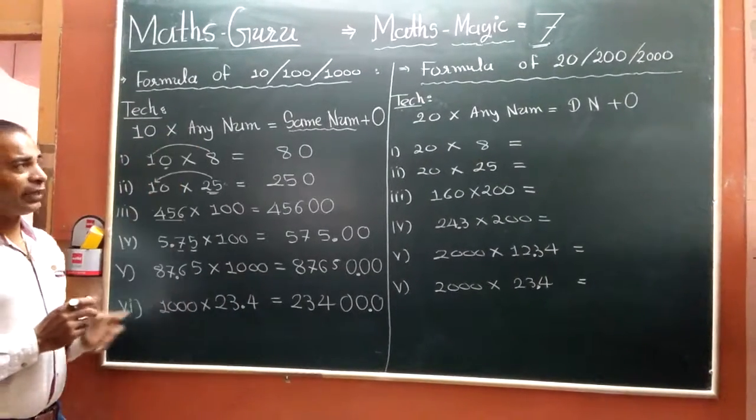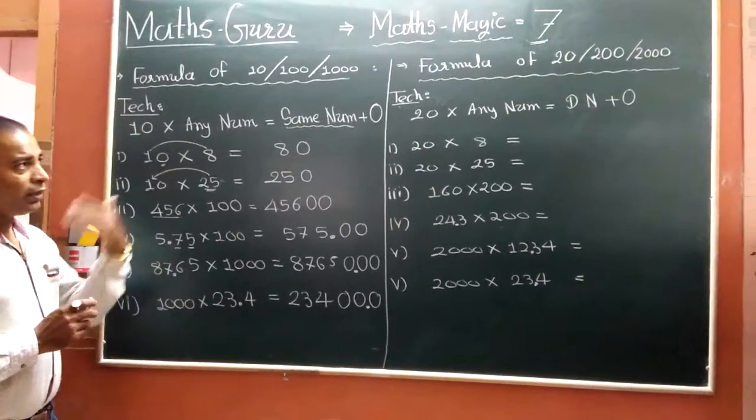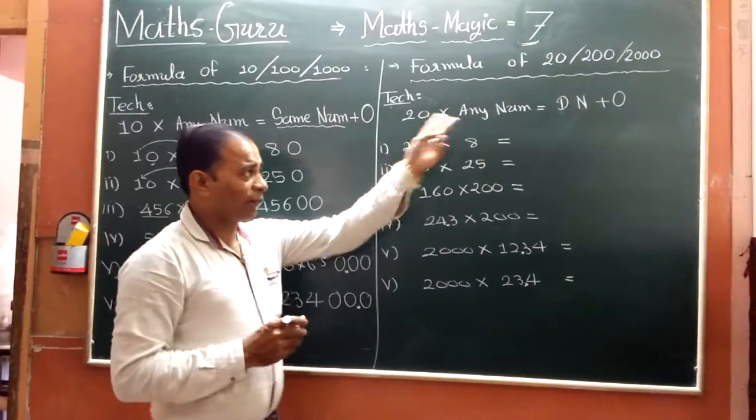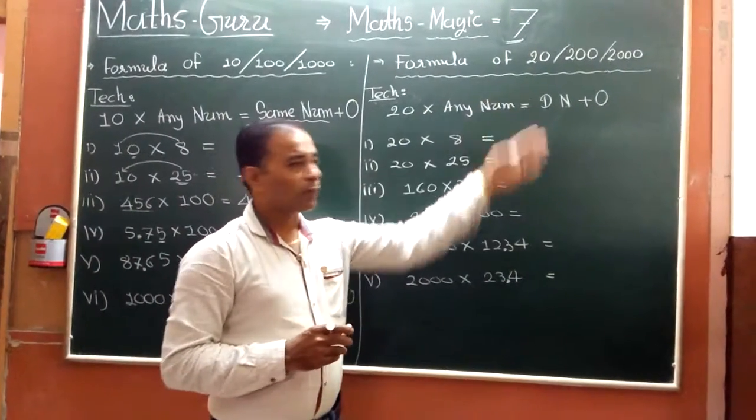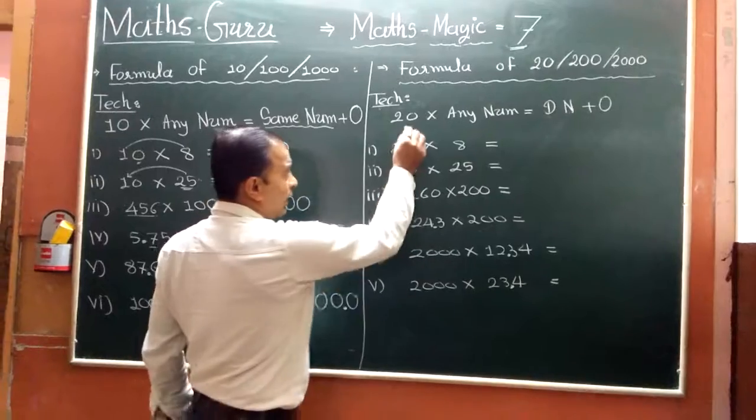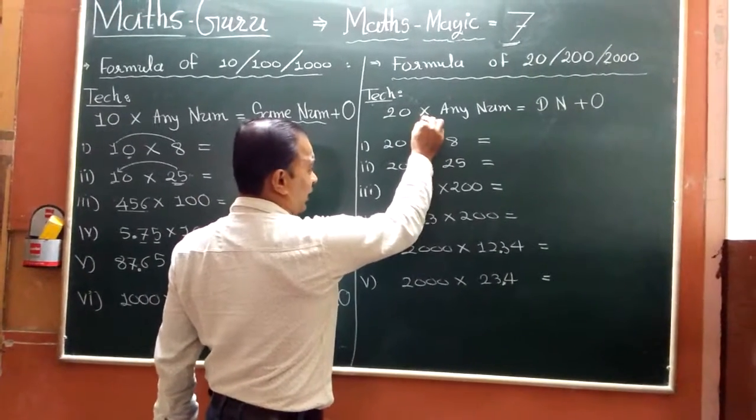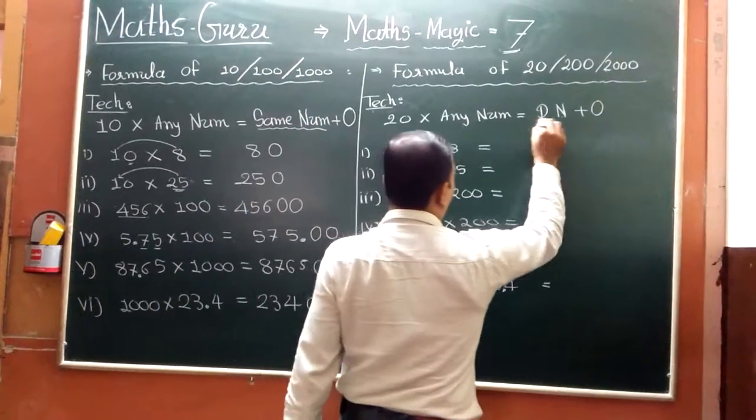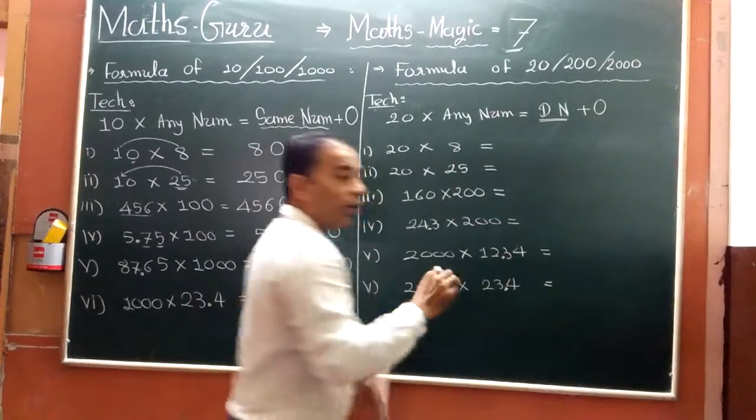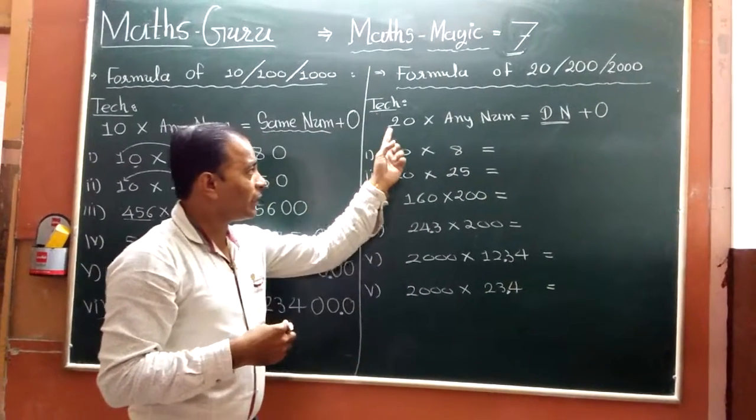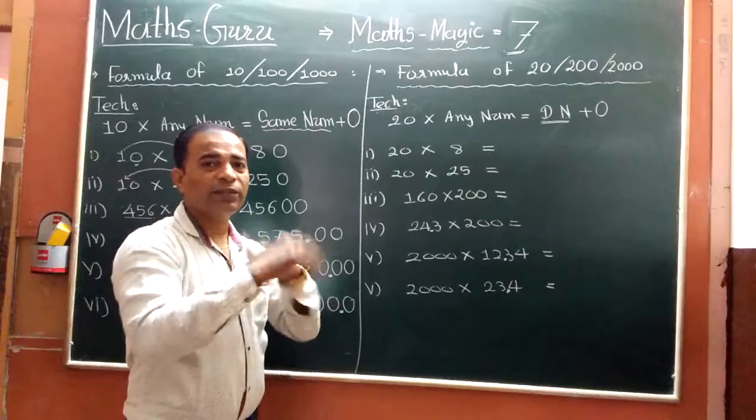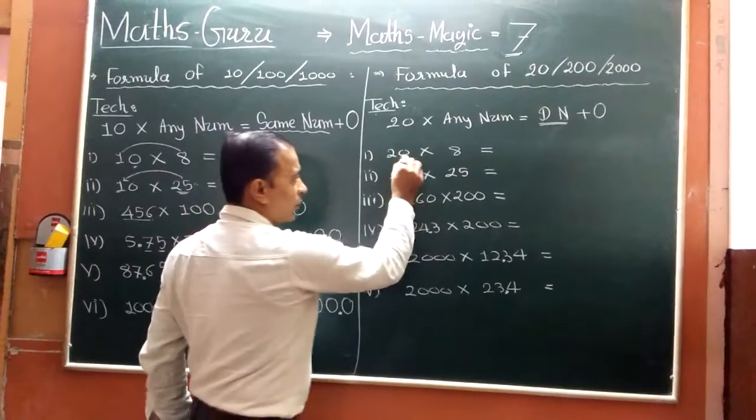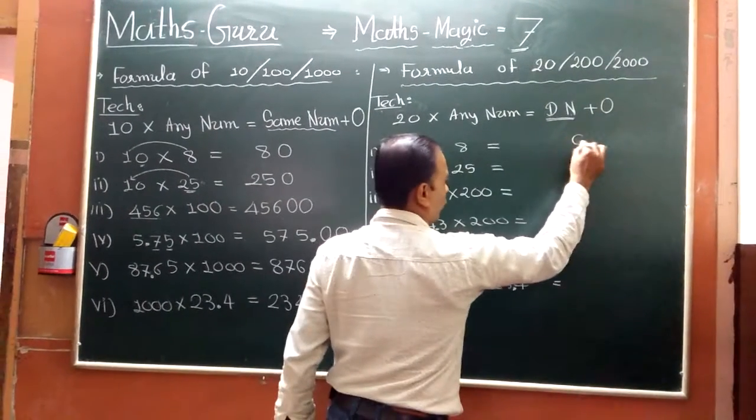10, 100, 1000. Next one here is 10, 200, 2000. 10, 20, 20, any number. So what is the number? Number, because this is 2. 2 means number 1, 0, 1, 0.